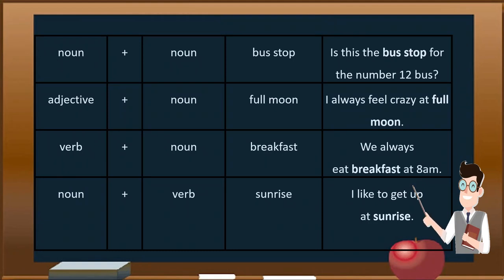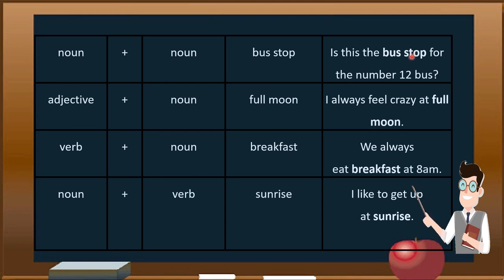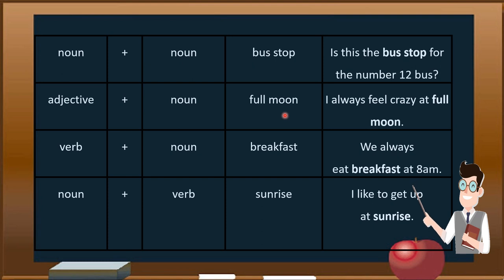The combinations of parts of speech: number one is noun plus noun. For example, 'bus stop' — in the sentence 'Is this the bus stop for the number 12 bus?' — 'bus stop' is the compound noun functioning as the subject. Another combination is adjective plus noun, like 'full moon' — written with a space, not solid or hyphenated. Example: 'I always feel crazy at full moon.'